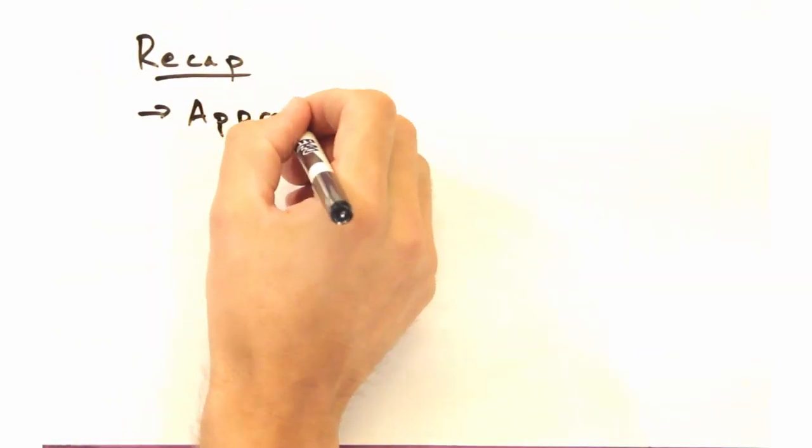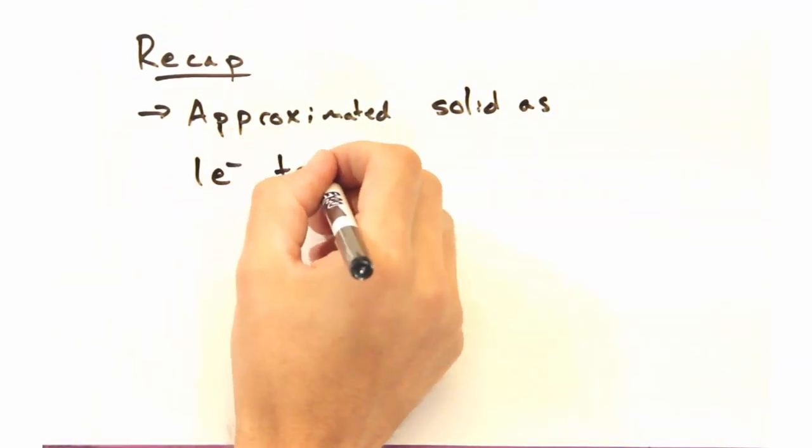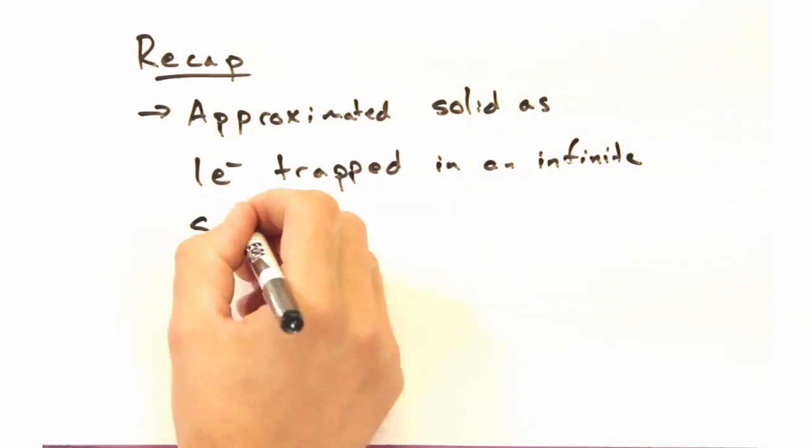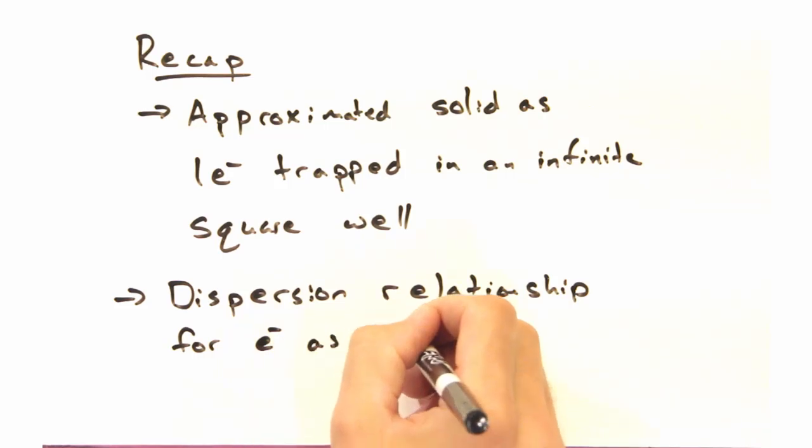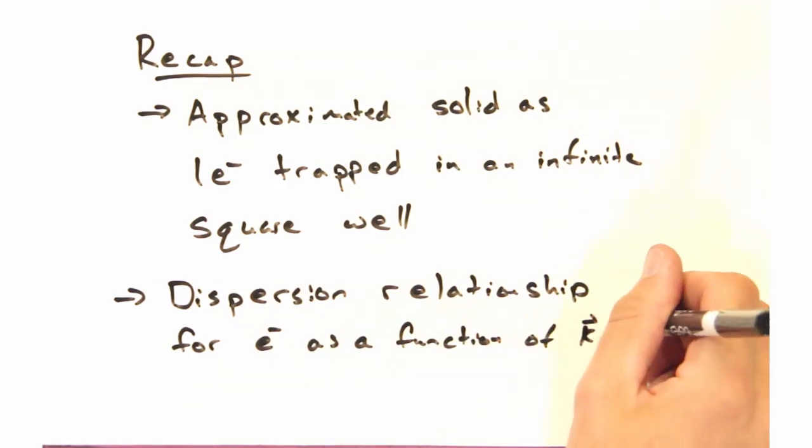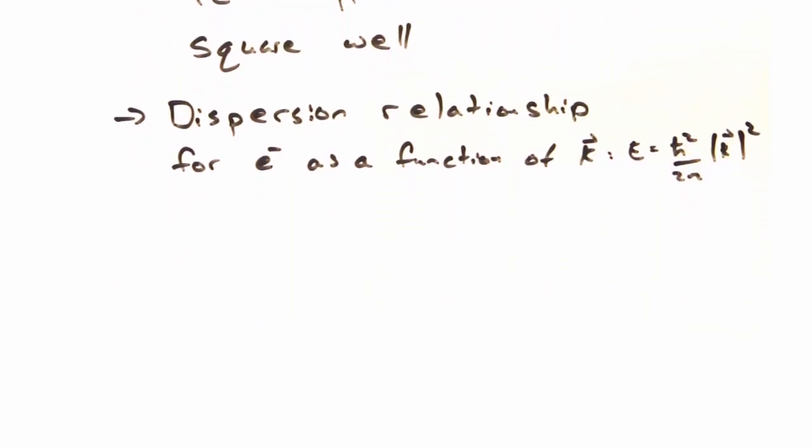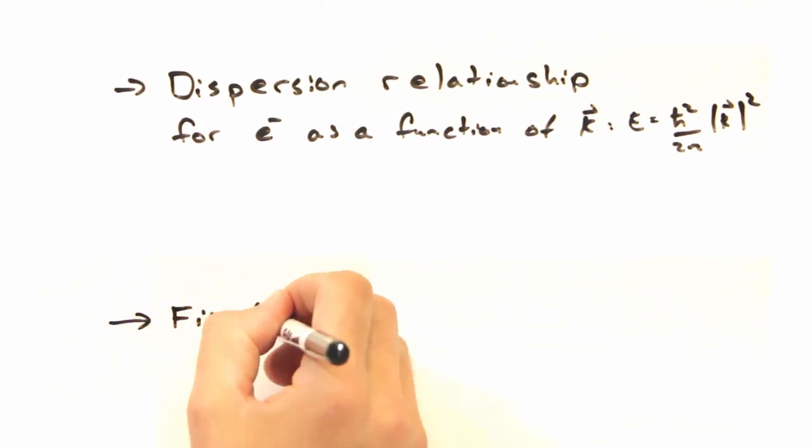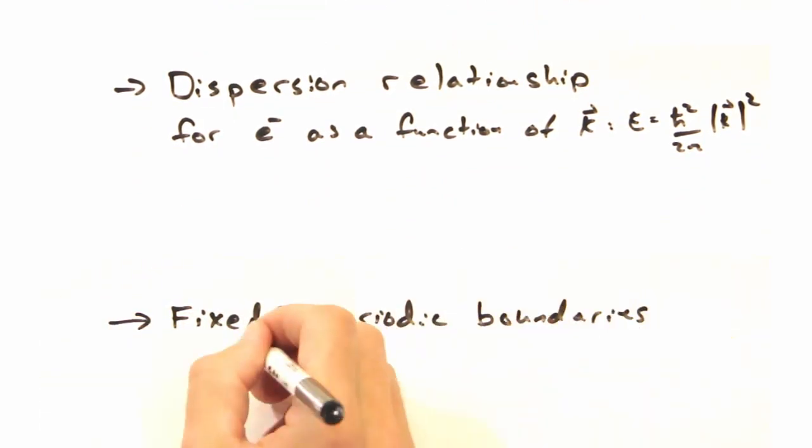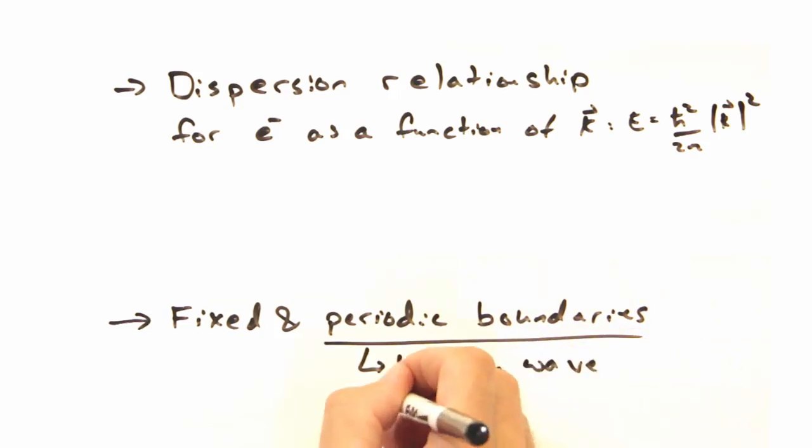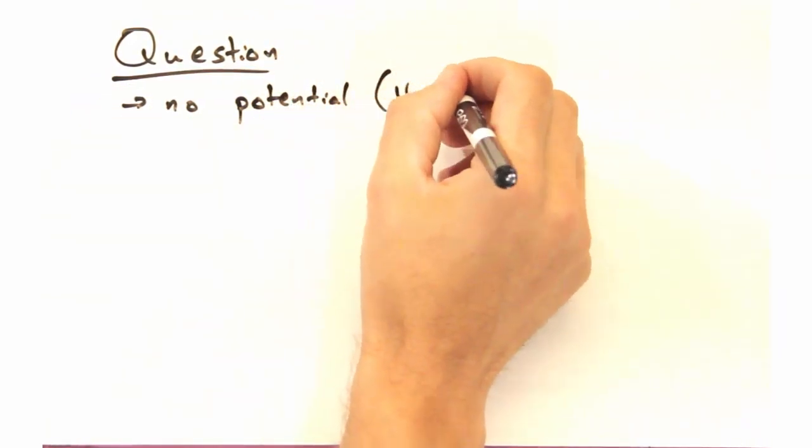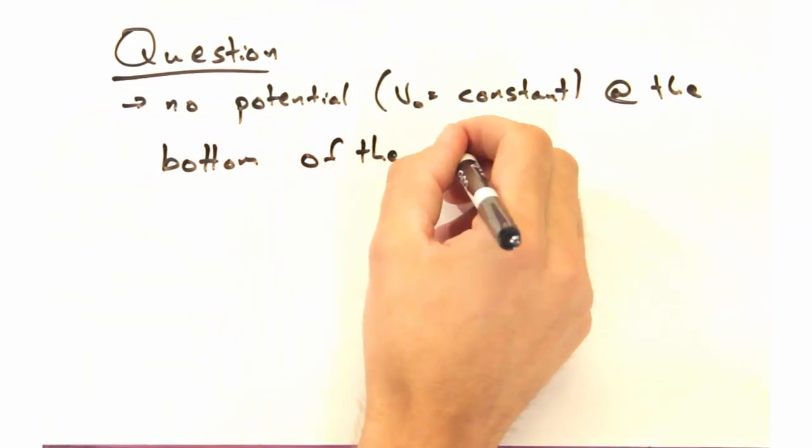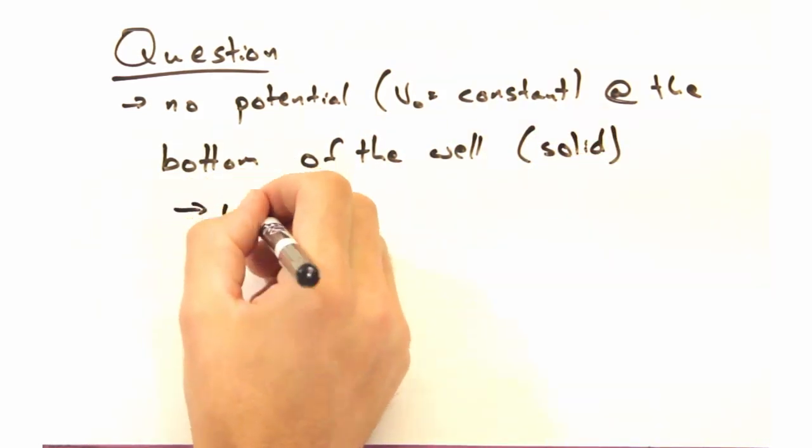So it looks like it's about time to do a recap. We began today by approximating our system as one electron trapped in an infinite square well. Then we developed a dispersion relation for the electron as a function of its quantum number k. Although we developed a solution for the wave function using fixed and periodic boundaries, in this course we'll focus on periodic boundaries, and thus the traveling wave solution for psi. Here's a question to think about for today. This model has no potential at the bottom, which seems like a ridiculous oversimplification. When do you think this is going to be appropriate?